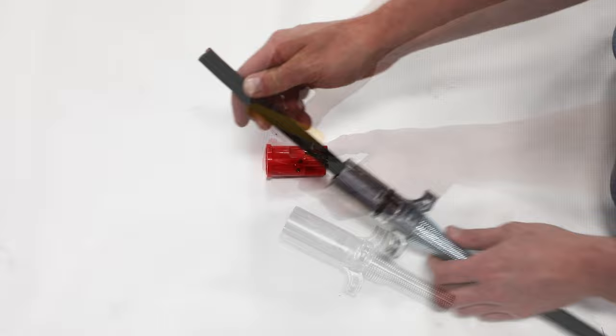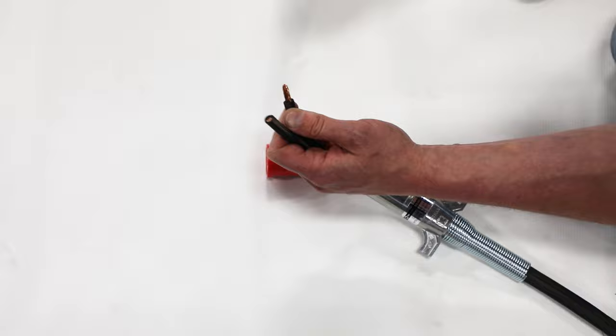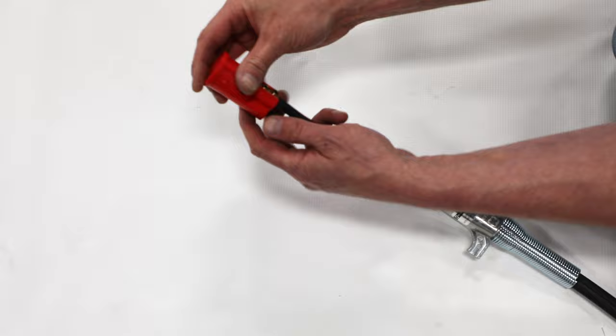Next, loosen set screw on dual-pole connector, then strip wire insulation off as needed to slide bare ends into appropriate terminals. Turn set screws tight into each bare wire.